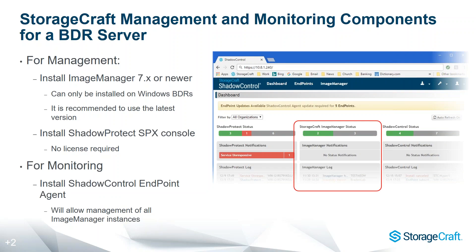Install Image Manager 7 or newer — it can only be installed on a Windows BDR and it's recommended to use the latest version. Install ShadowProtect SPX console where no license is required. When building your BDR, it shouldn't have a cost above and beyond the hardware, because you do not need to license the SPX installation on that BDR — you're not backing anything up. You're using the recovery features within SPX to recover environments, do file and folder recovery, and full bare metal restore.